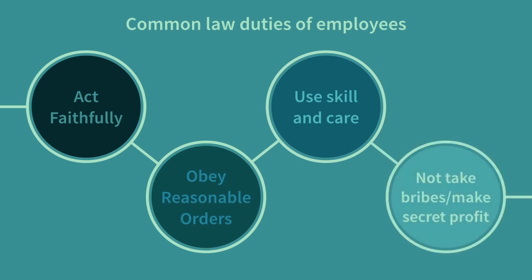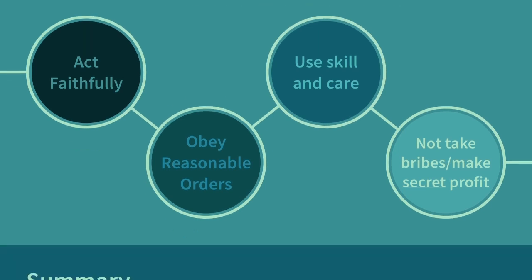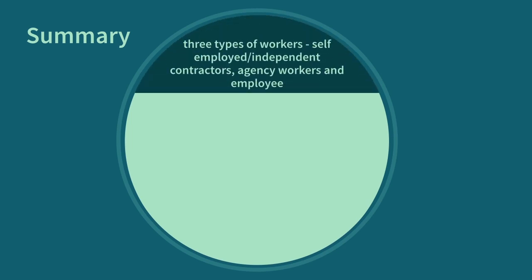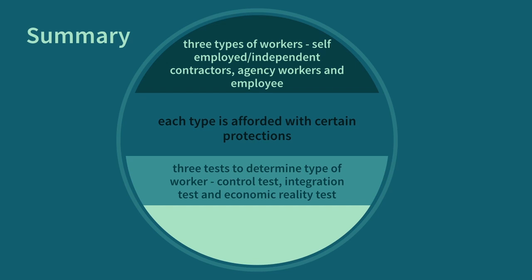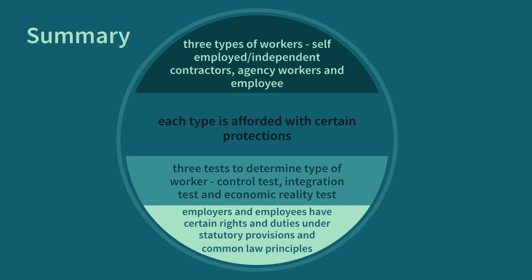To not take bribes or make a secret profit: this duty is an example of the general duty of good faith, and it covers the situation where an employee has received money or gifts from customers or clients. In conclusion, there are three types of workers: self-employed independent contractors, agency workers, and employees. Each type is afforded certain protections. The courts have created three tests to determine whether a worker is an employee or a self-employed independent contractor: the control test, the integration test, and the economic reality test. An employment contract need not be in writing. Both employers and employees have certain rights and duties under statutory provisions and common law principles.